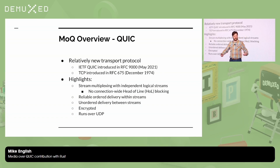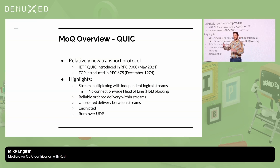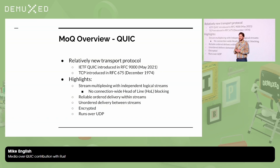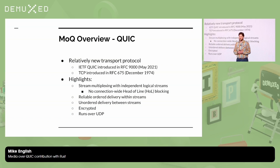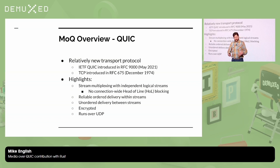It's RFC 9000, which means everything that comes after QUIC is now beyond 9000. QUIC gives us stream multiplexing with independent logical streams, which means we don't have connection-wide head-of-line blocking like we have with TCP. We have reliable ordered delivery within streams, and between streams it's unordered. It's also end-to-end encrypted and runs over UDP.